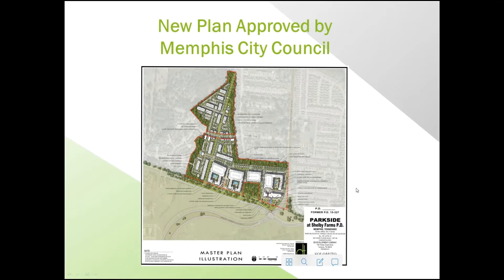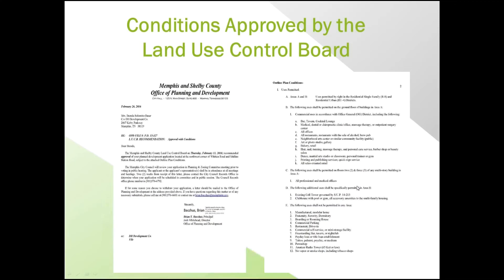We designed the new plan that went through the Land Use Control Board. The process is different in every county and city across the United States, but ours is through the Land Use Control Board of Shelby County and the City of Memphis. You have to go through a process of laying out what you want to do, going through all the zoning regulations, deciding what you can do — and part of that is meeting with the neighbors to understand what they're willing to go along with and what's the best thing to do.